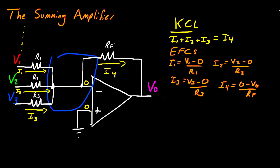So I'm going to start with substituting my Ohm's Law equations into my KCL, and that's going to look like V1 divided by R1 plus V2 divided by R2 plus V3 divided by R3 is equal to negative VO divided by RF.